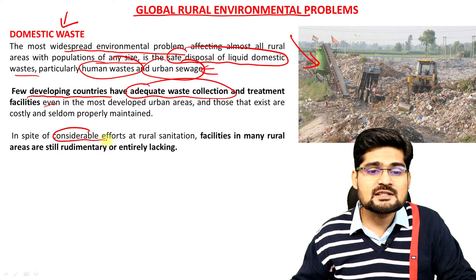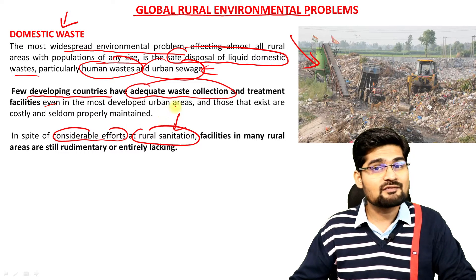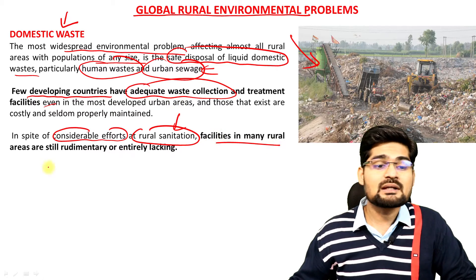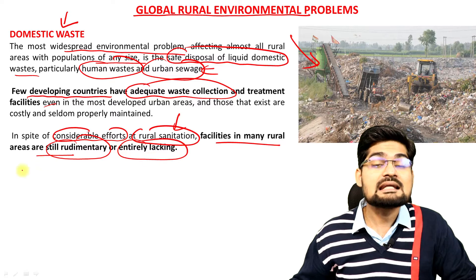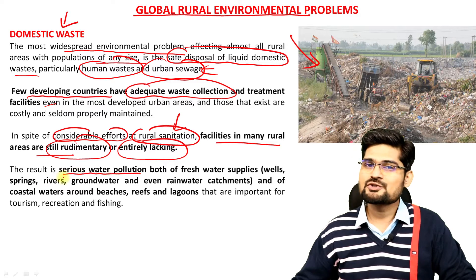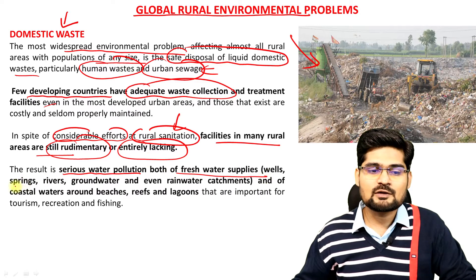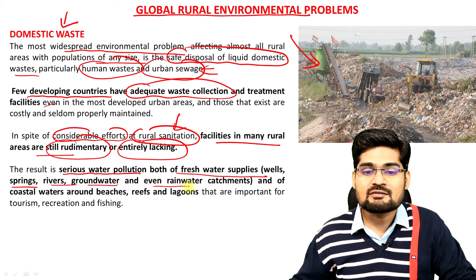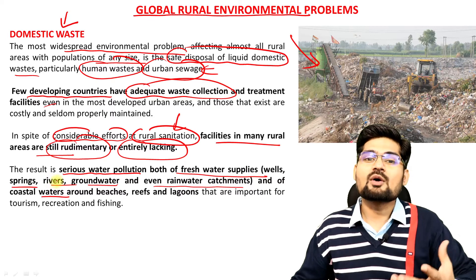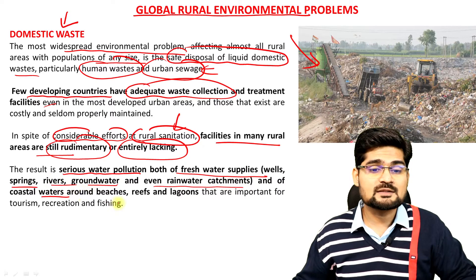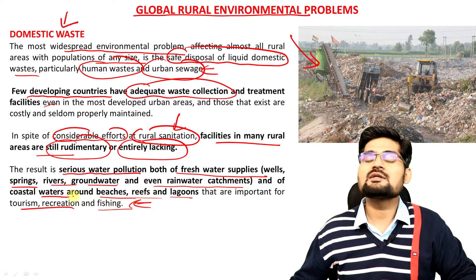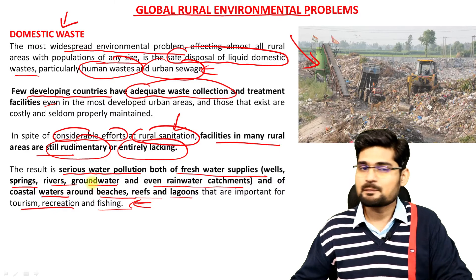In spite of considerable efforts on rural sanitation — remember in India we have the Swachh Bharat Abhiyan going on — facilities in many rural areas are still rudimentary or entirely lacking. The result is serious water pollution of both fresh water supplies like underground water, springs, rivers, groundwater wells, and even rainwater catchments. In coastal areas, problems around beaches, reefs and lagoons are related to recreation, tourism and fishing. Domestic waste disposal is a big problem.